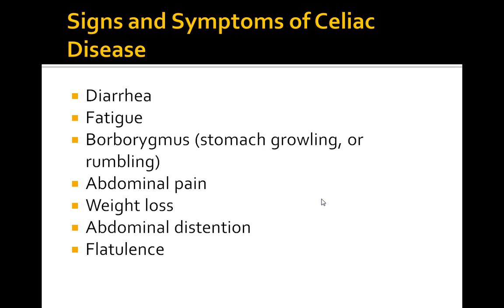Celiac disease is an autoimmune-mediated intolerance of gliadin leading to steatorrhea. It's associated with people of northern European descent. Gliadin, which is a part of the protein gluten, is the substance associated with small intestinal damage. Surface epithelial cells are destroyed, the villi become blunted or flat, the crypts hypertrophy, and brush border enzyme levels are greatly decreased.